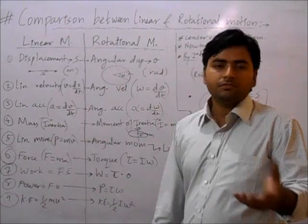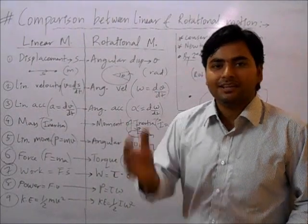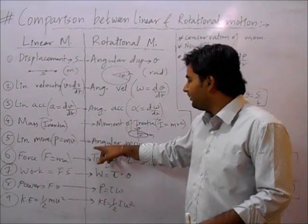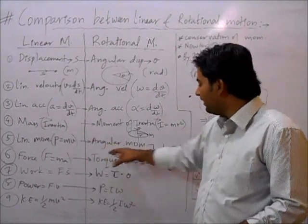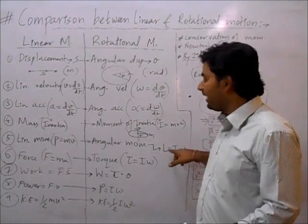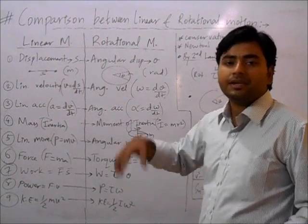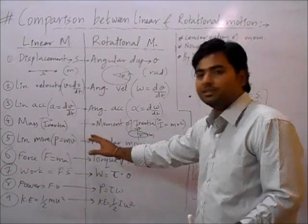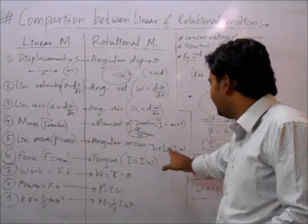Next is linear momentum. We know linear momentum p = mv. In rotational motion, mass is replaced by moment of inertia I, and velocity by angular velocity omega. So angular momentum L = Iω.